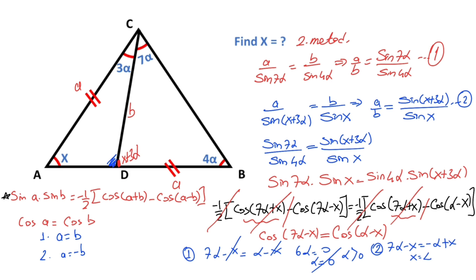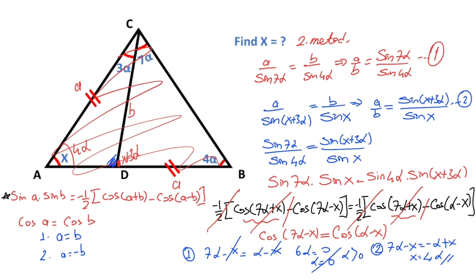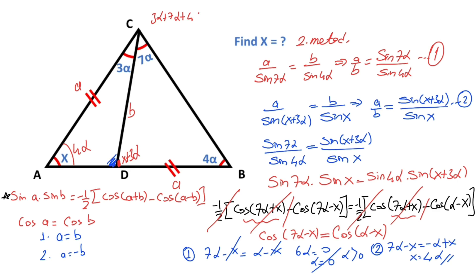Second scenario: 7 alpha minus X must equal minus alpha plus X. So 2X equals 8 alpha, that means X equals 4 alpha. Therefore, angle BAC equals 4 alpha. And then, if you focus on triangle ACB, we know that the sum of interior angles equals 180 degrees. That means 18 alpha equals 180 degrees, so alpha is going to be 10 degrees. Thanks for watching, and if you want more videos like this, please subscribe to my channel. Bye!